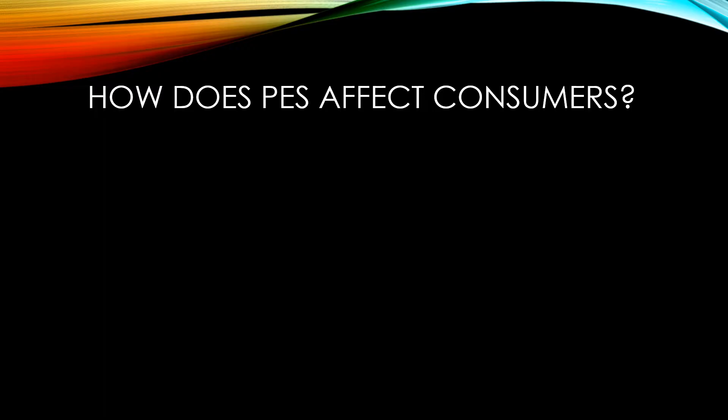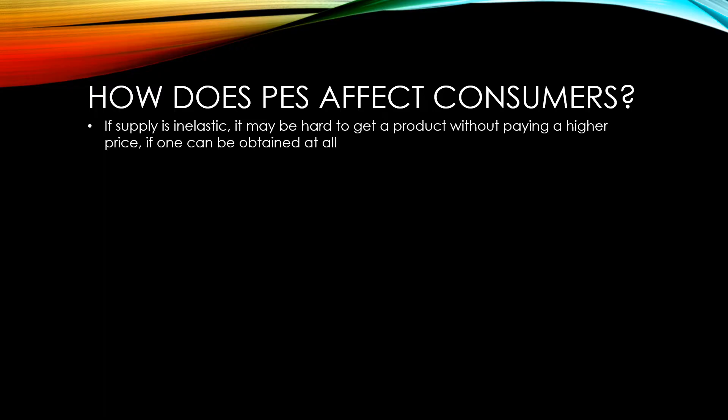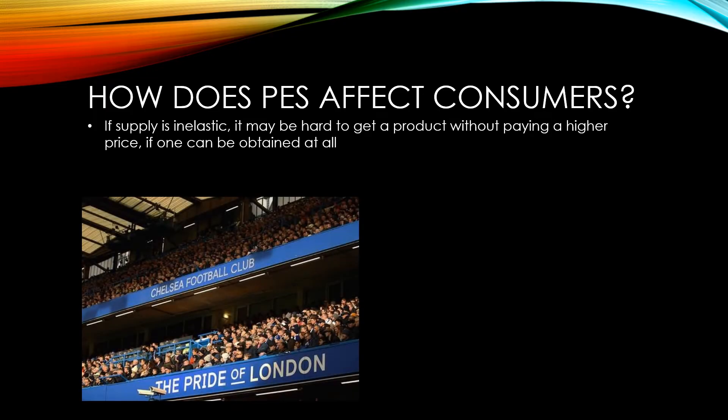Consumers are unlikely to calculate price elasticity of supply for themselves, but it can still affect them. If supply is inelastic, it may be hard to get hold of a product without paying a higher price, if one can be obtained at all. An example of this would be tickets to major sporting events or concerts, where the number of seats is limited and may not match the number of people who want to go.